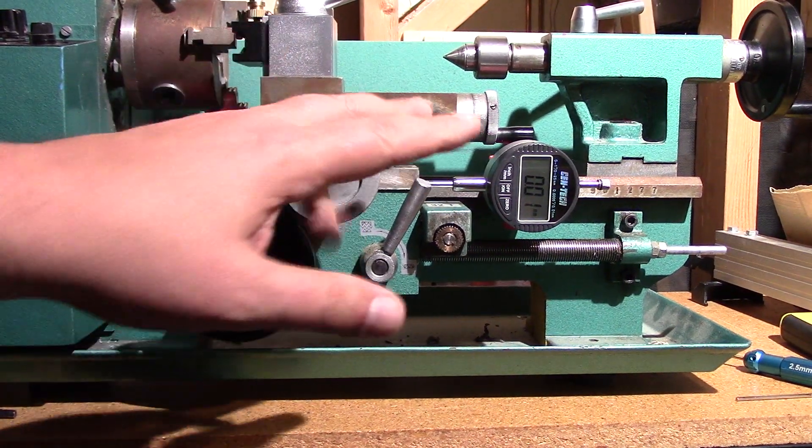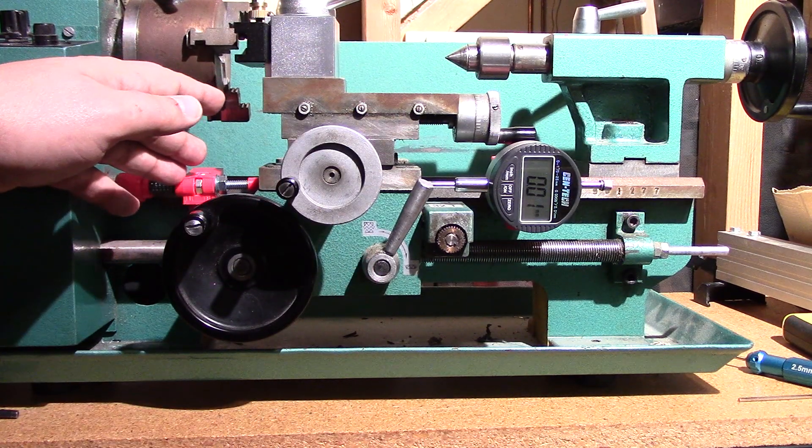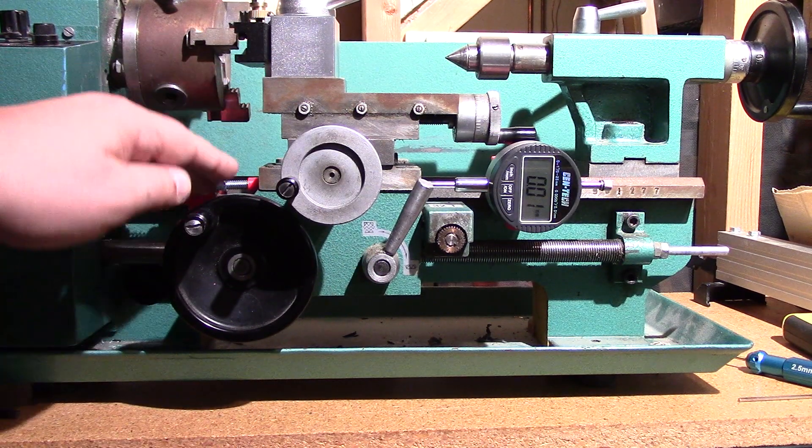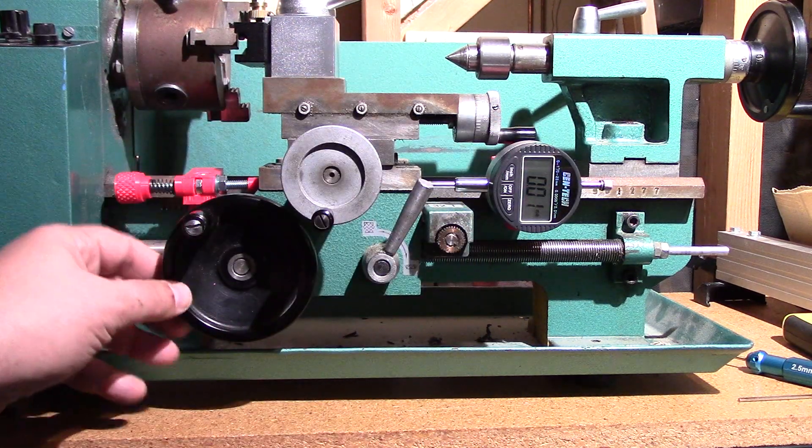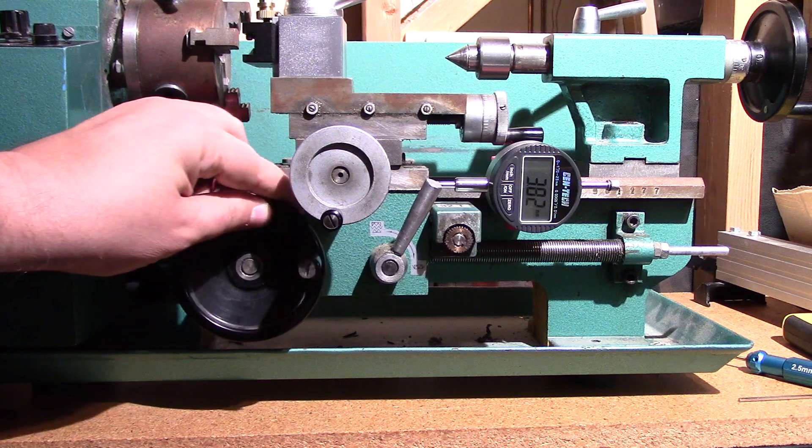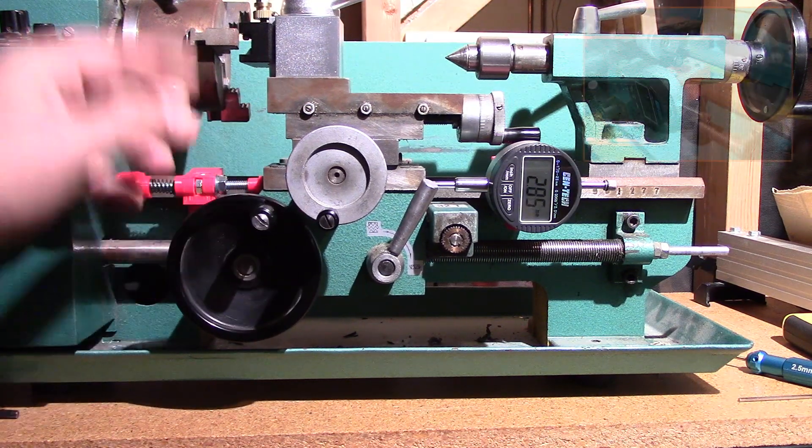Okay, welcome back. We're at the lathe now. As you see, I've got it installed over here. So, in the front here, I've got my end stop, my carriage end stop set up. And back here, I've got my poor man's DRO. And as you can see, as I move this back and forth, I get a digital readout of the position of my tool.